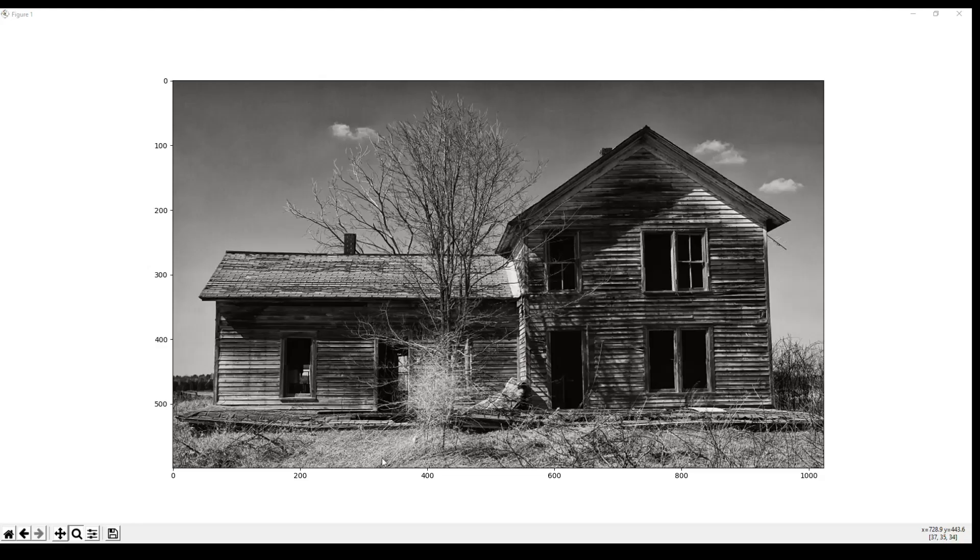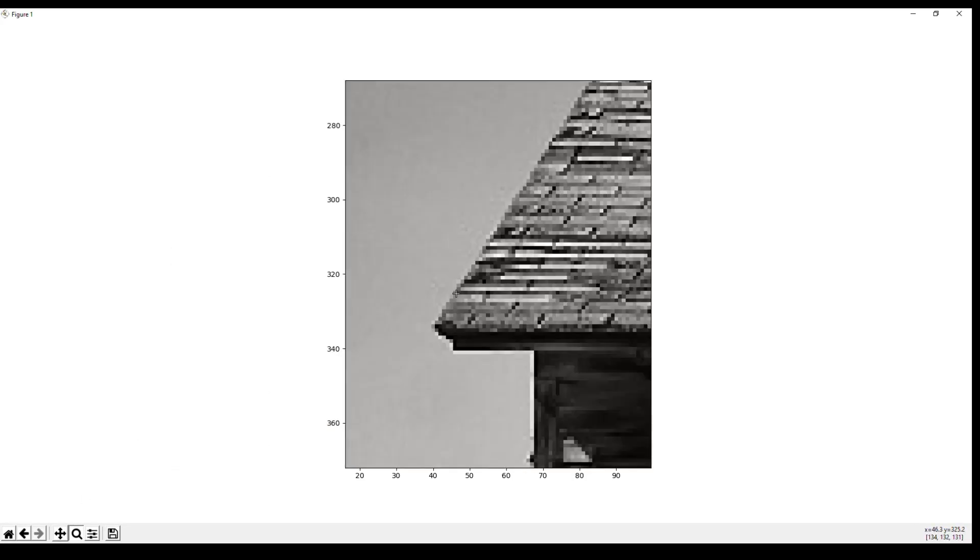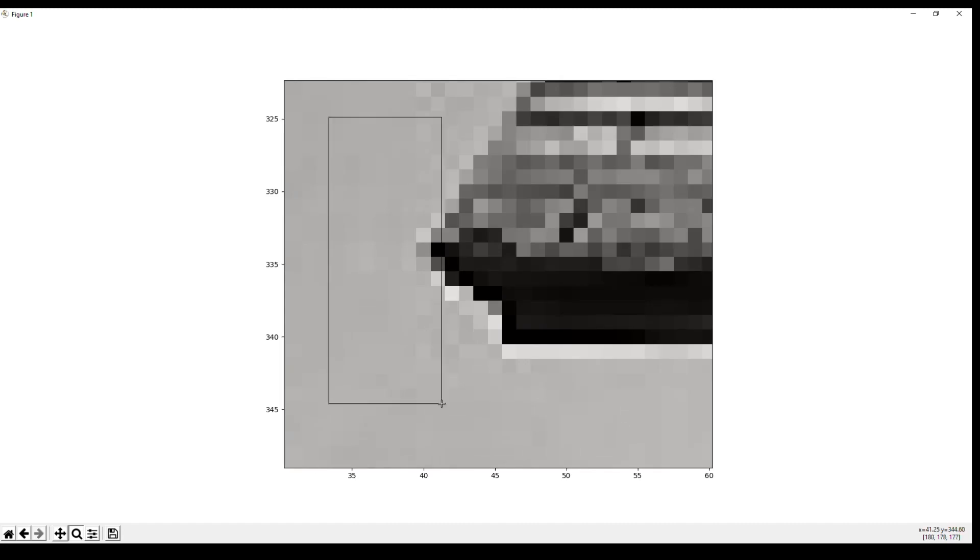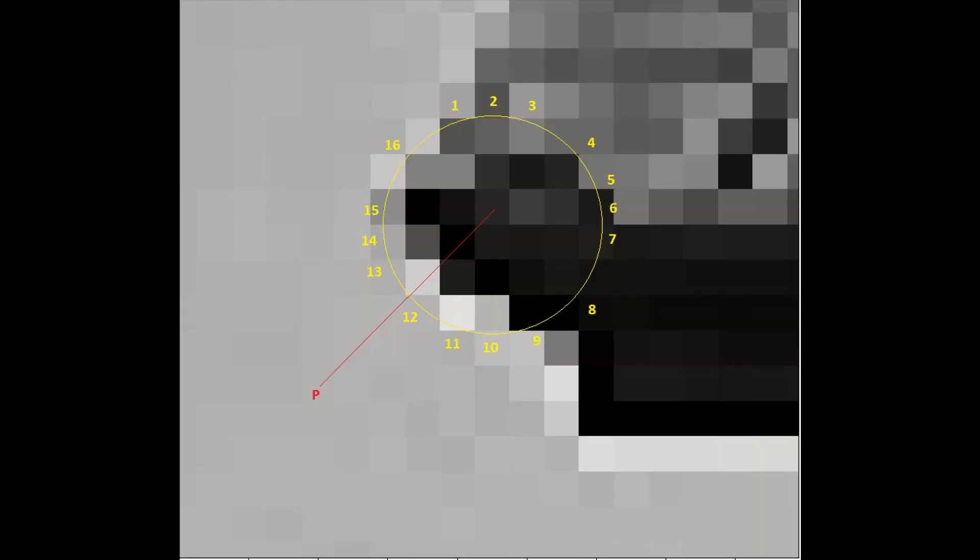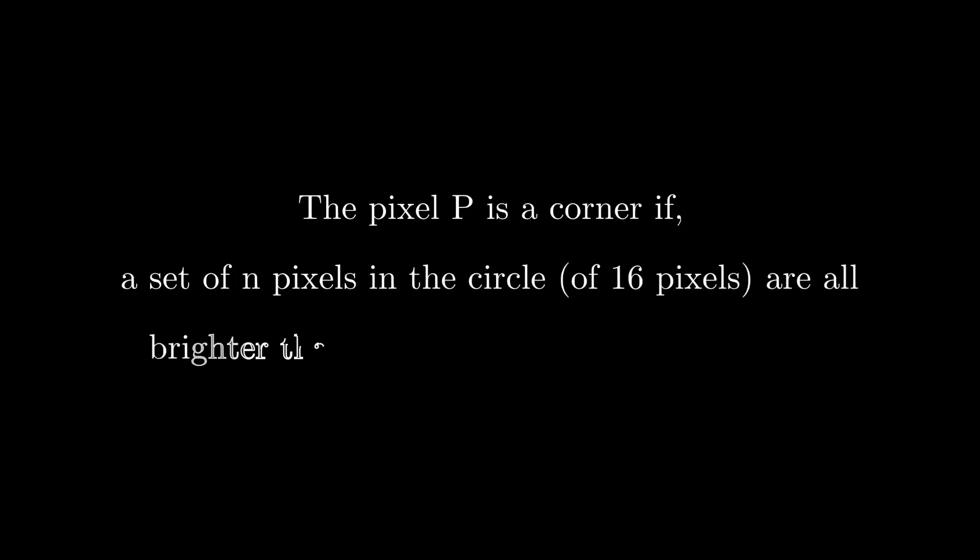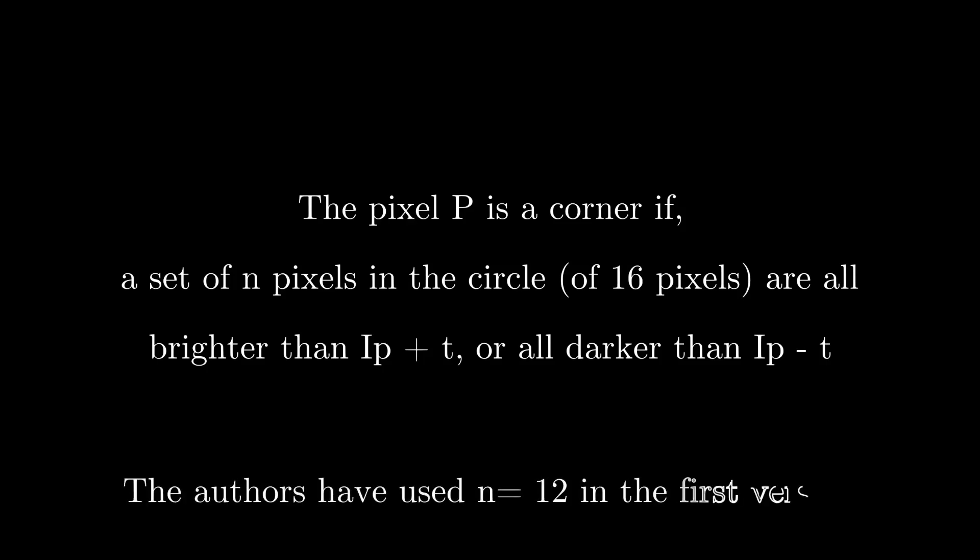Before we start with our final feature detector, let's zoom into the image. FAST feature detector identifies the features by comparing pixel values with its 16 neighbors. The pixel P is a corner if there exists a set of n pixels in the circle which are all brighter than ip+t or all darker than ip-t. The value of t can be passed by the user as an input parameter to the algorithm.